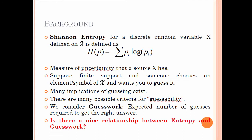We also have to review what guessing is. Suppose we have a finite support set X, and someone chooses an element from this set and wants you to guess it. There are many possible criteria for guessability — in other words, how we can measure whether something is guessable or not. We will consider one particular guessability measure called guesswork, which in more technical terms is the expected number of guesses required to get the right answer. The main question of this lecture series is: is there a nice relationship between entropy and guesswork?